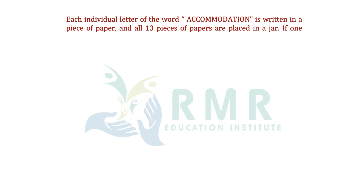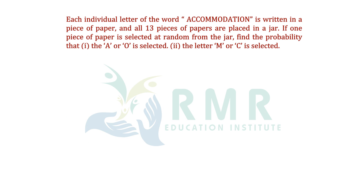Each individual letter of the word 'accommodation' is written on a piece of paper, and all the pieces of paper are placed in a jar. If one piece of paper is selected at random from the jar, find the probability that the letter A or O is selected. Second sub-question: the letter M or C is selected.